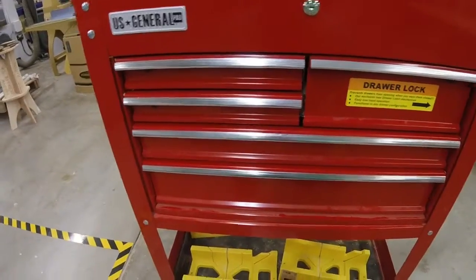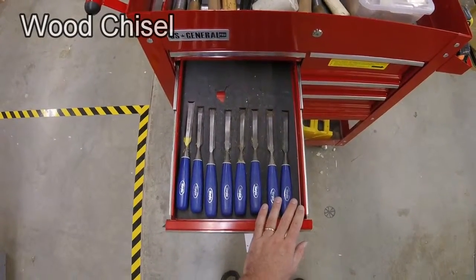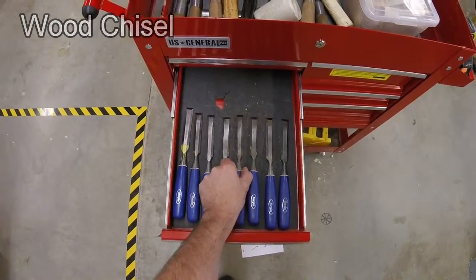The next item on the list is the chisel. You'll find these in the drawer. There are eight of these. We try to keep these so sharp I can shave with them.